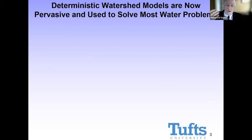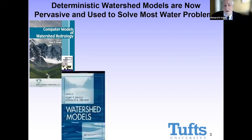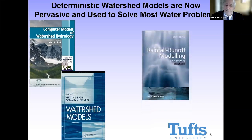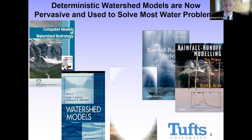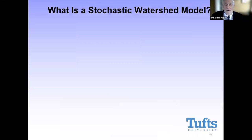Deterministic watershed models are pervasive. Many of you have seen textbooks by some of our favorite researchers summarizing literally dozens of rainfall-runoff models, also called watershed models — chapters of different models. They've been around for a long time, increasingly sophisticated in time and space scales, and they're wonderful tools. The question is: how can we use them in the proper framework to extend their applicability to risk-based planning over long-range periods?